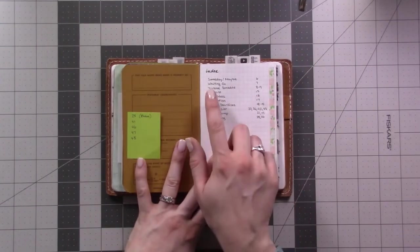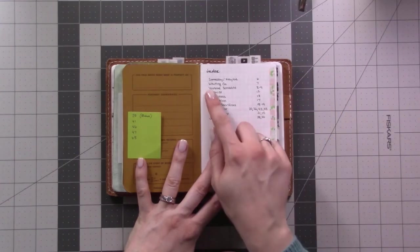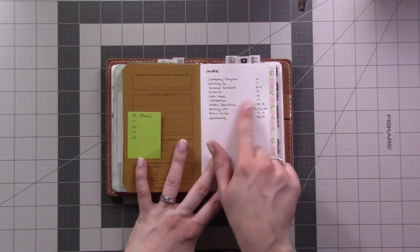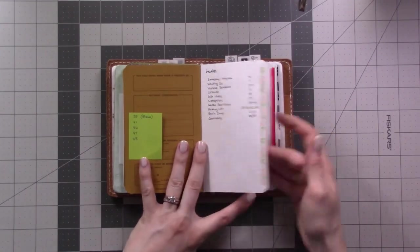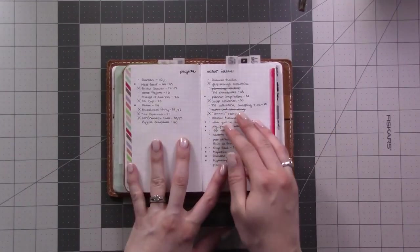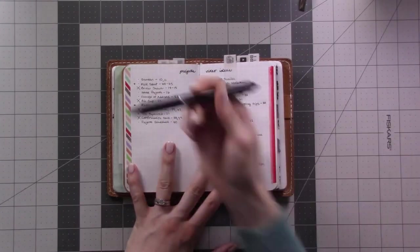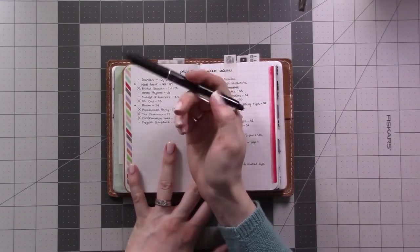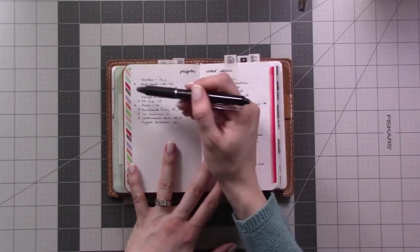The first index is for things that aren't really project pages, so I have a someday maybe list. Then next, these are projects. I use a friction ballpoint pen for most of my planning. These are erasable and so I put a star next to a project when it is currently active.